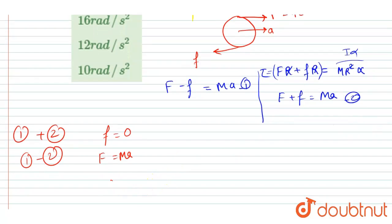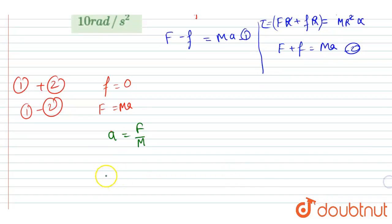So from here just note down the value of a - a is F by m. And now alpha is equals to a by r.